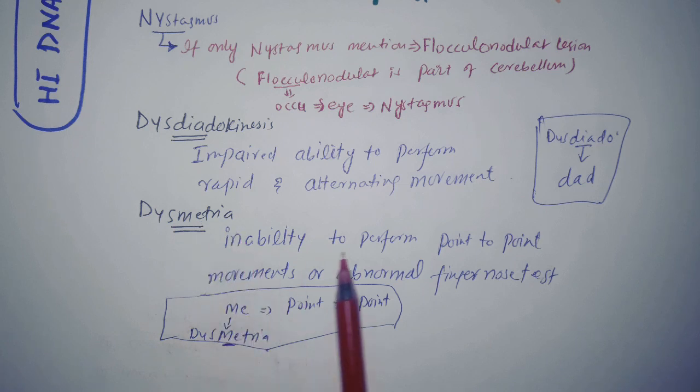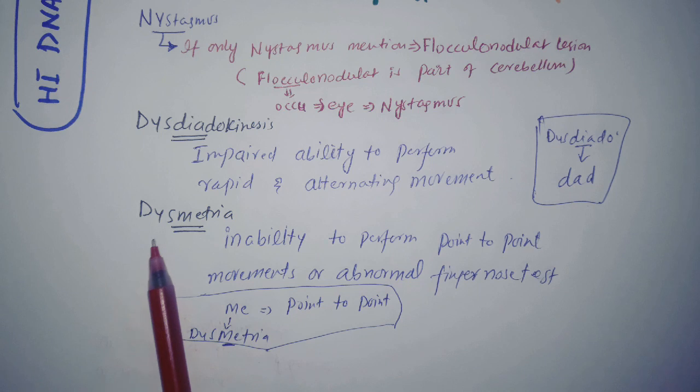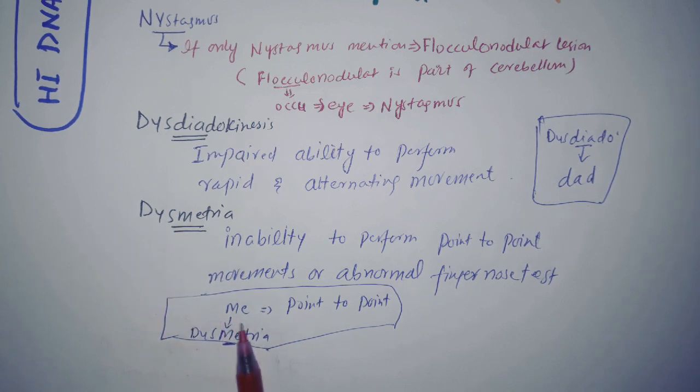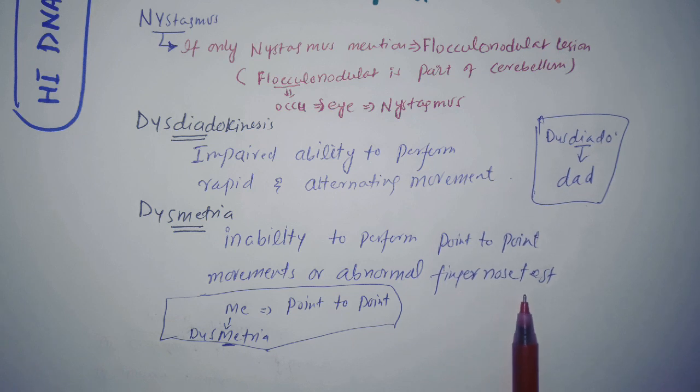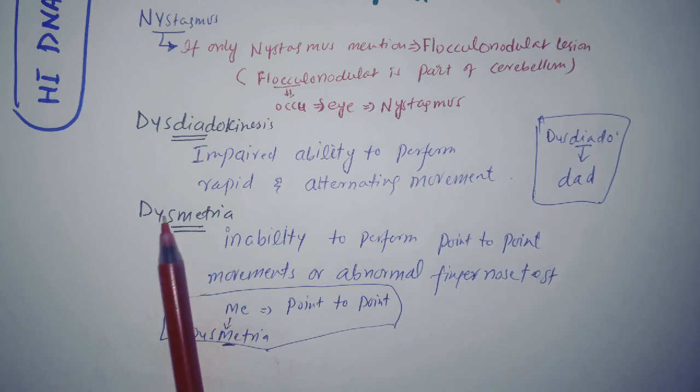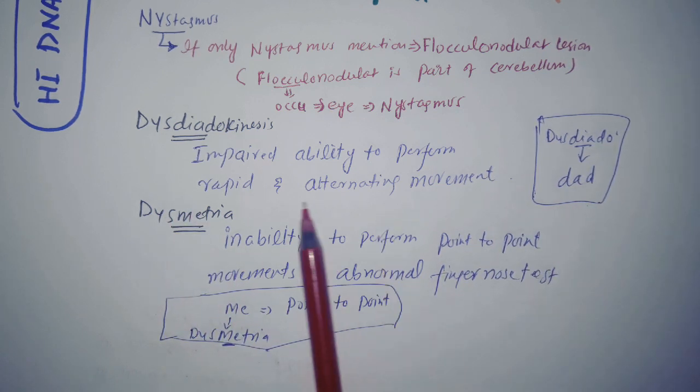Now dysmetria, inability to perform point to point movement or abnormal finger nose test. Here is the word ME in this. And I will point this. I cannot do point to point movement. I means me. Me cannot do point to point movement. And this is how I will remember. Or me cannot do abnormal, or I have abnormal finger nose test. So from this me I will remember it, and from this dead I will remember.